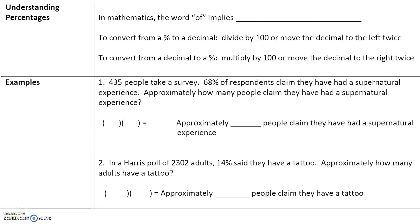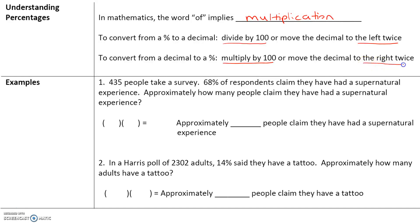In this part of section 1.2, we will talk about percentages and pie charts. In mathematics, the word 'of' implies multiplication. Recall: to convert from a percent to a decimal, we can either divide by 100 or move the decimal to the left twice. To convert from a decimal to a percent, we can either multiply by 100 or move the decimal to the right twice.